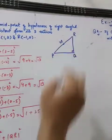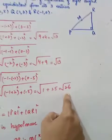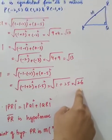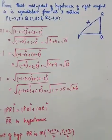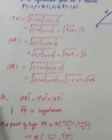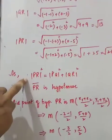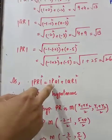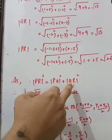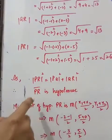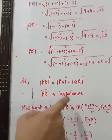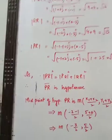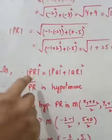PR ka maan under root 26 aa raha hai. In dono ko add karo to PR ke barabar ban raha hai. PR square is equal to PQ square plus QR square — therefore PR is the hypotenuse.